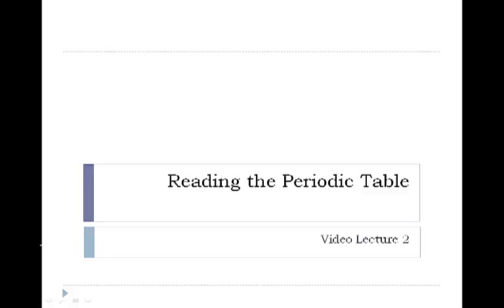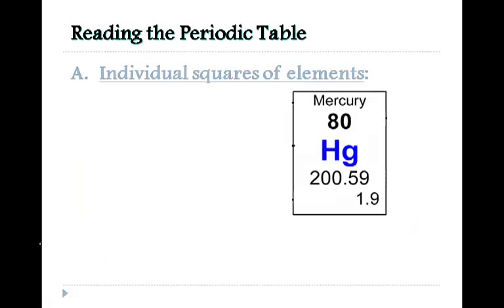Alright, video lecture two: reading the periodic table. When we first take a look at the individual cells on the periodic table, remember it gives us a bit of information. It tells us the atomic mass, the atomic number, and we can also use the location of the cell in the periodic table to help us figure out the electron configuration.